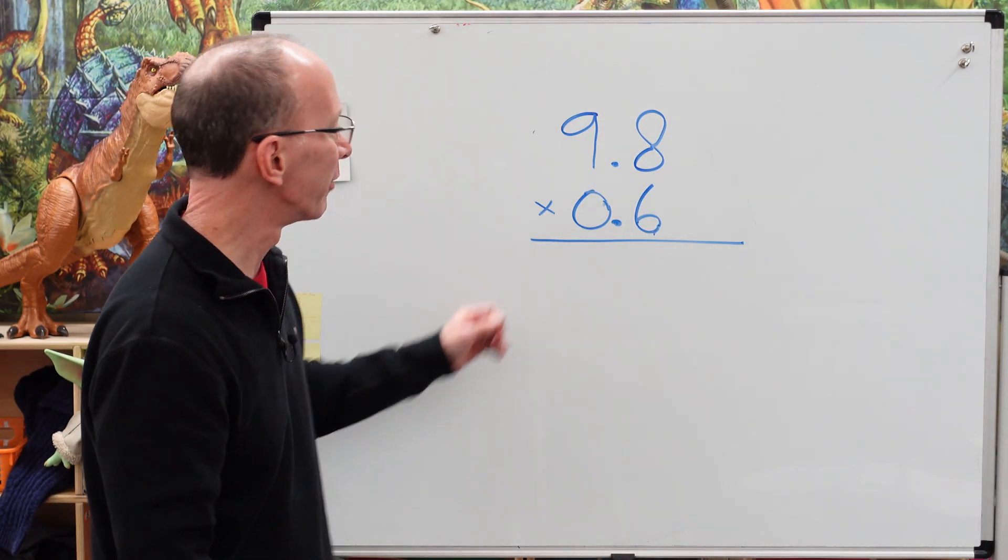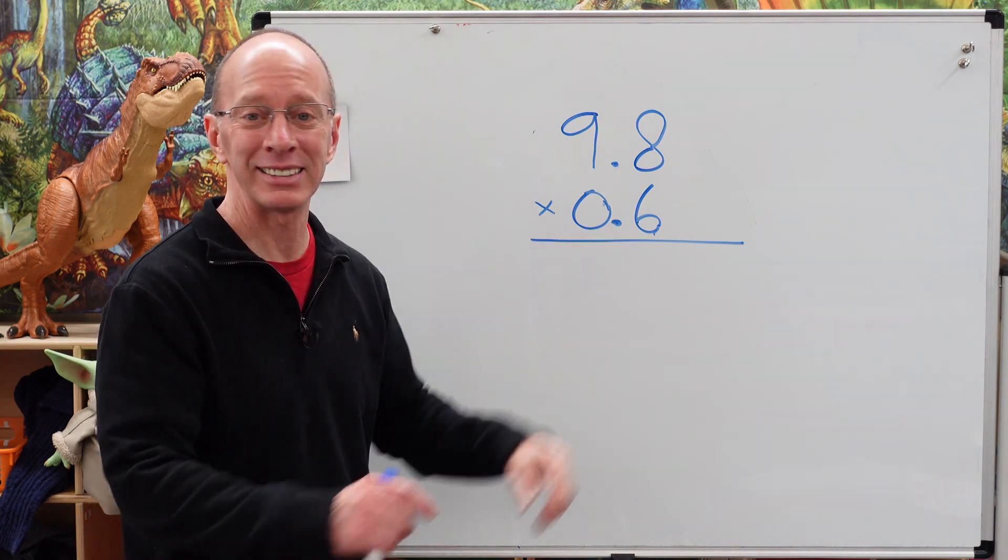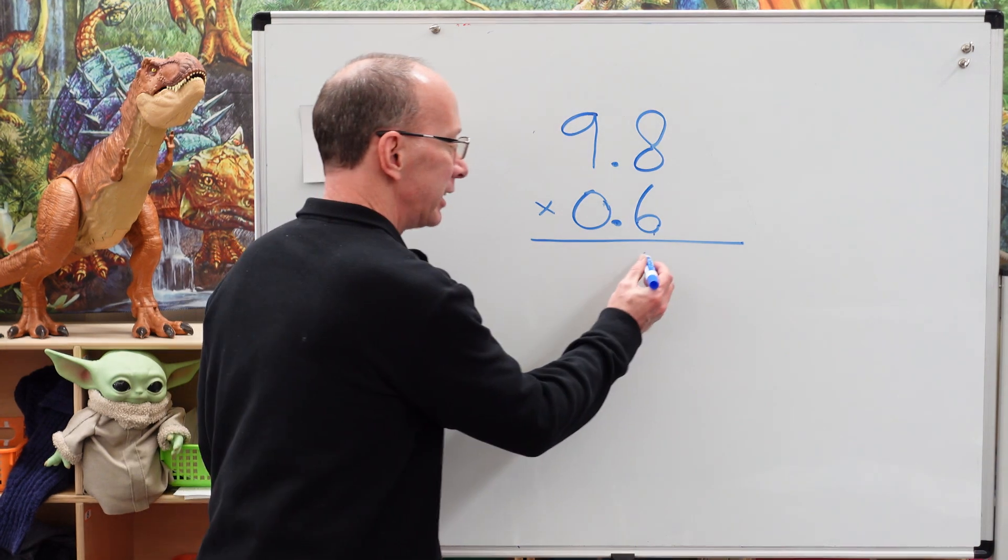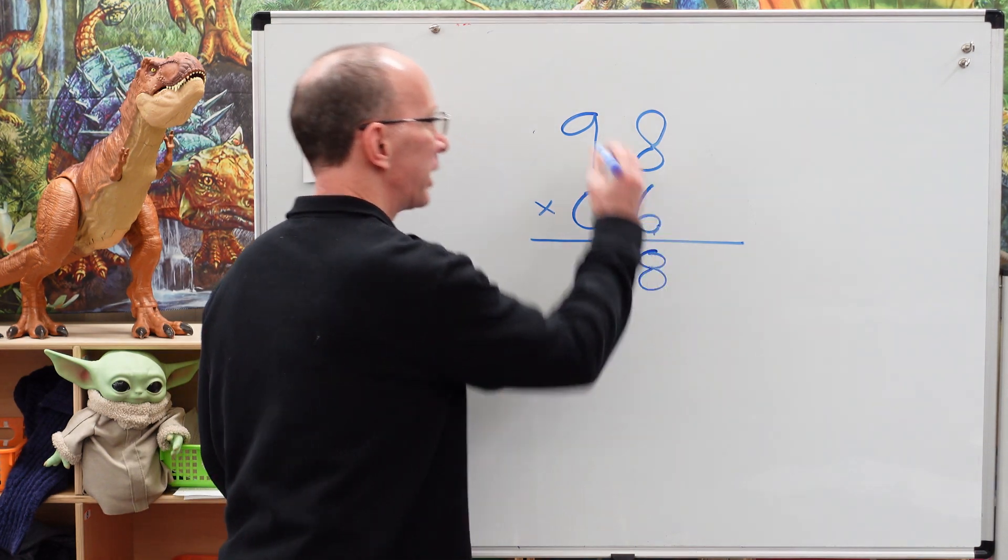All right. Welcome back. All right. We had the number 9.8 times 0.6. All right. Let's begin. 8 times 6. What is it? 48. See how important it is to memorize your multiplication facts.